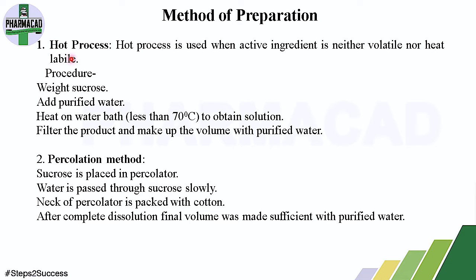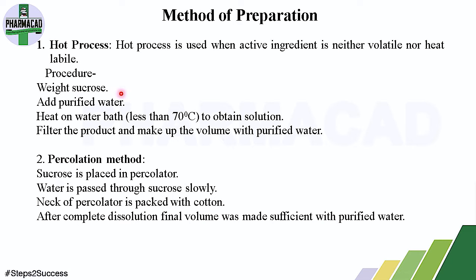The first method is the hot process. As the name indicates, heat is applied to dissolve the ingredients. The hot process is used when the active ingredient is neither volatile nor heat-labile. If the substance is volatile, it will volatilize on heating; if it is heat-labile, it will be destroyed in the presence of heat.